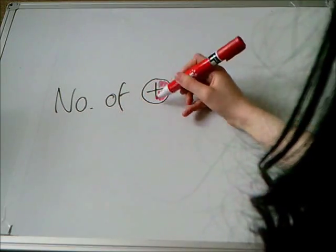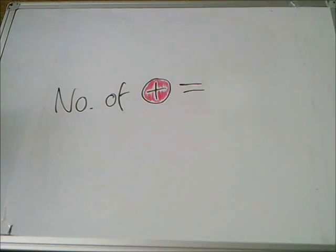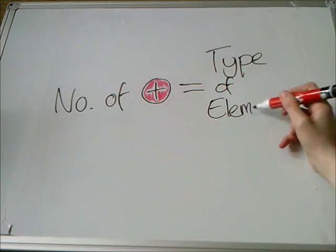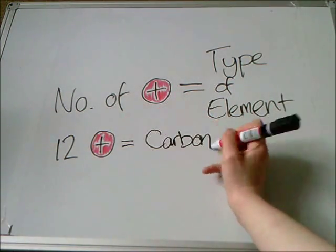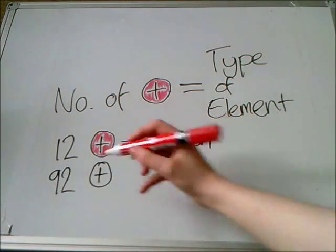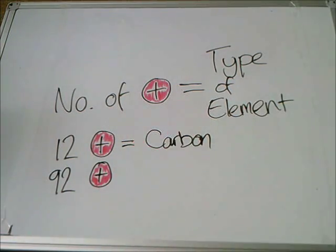The number of protons in an atom tells us what type of element the atom is. For example, 12 protons gives us carbon, and 92 protons gives us uranium.